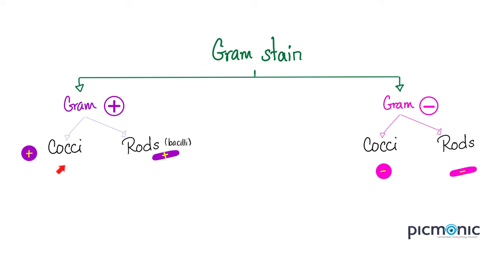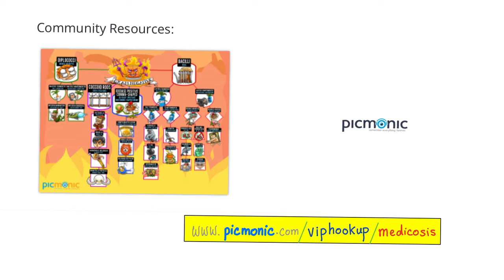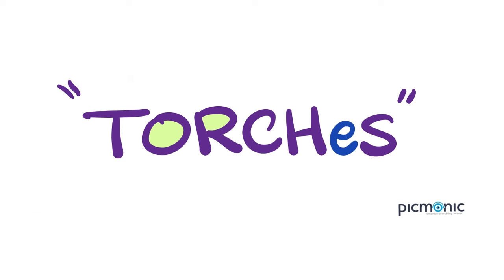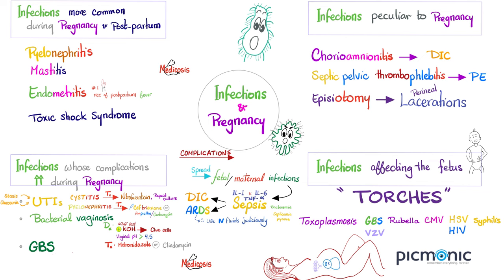We have talked about group B strep as well as syphilis in previous videos. If you want a nice animated chart to help you classify these organisms — the gram-positives, the gram-negatives, etc. — Picmonic has a very nice chart. Today we're talking about TORCH infections. There are many types of infections associated with pregnancy. There are infections that are more common during pregnancy and postpartum, but they are higher risk at pregnancy. There are other infections whose complications increase during pregnancy, such as group B strep.